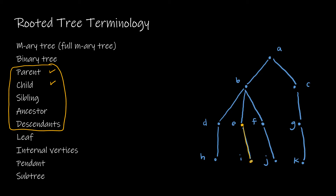E is a parent and has I as a child, but E is also a child of B — just like in normal families. Siblings are two children of the same parent, so B and C would be considered siblings. An ancestor is a parent, grandparent, or great-grandparent — so the ancestors of E would include B and A. Descendants of E would be just the child I, since J is not directly connected to E.